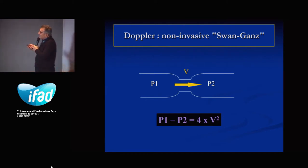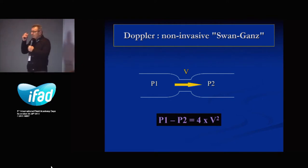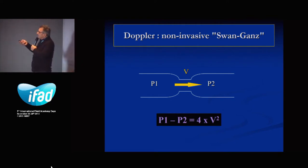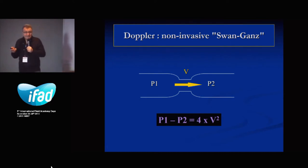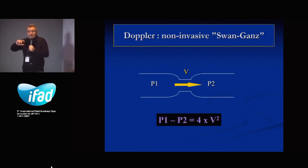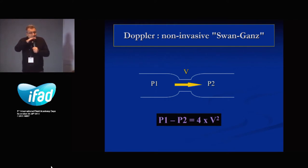That is a very important concept to keep in mind: when you have any velocity, convert that velocity into a pressure gradient between the two cavities through which the flow is moving.